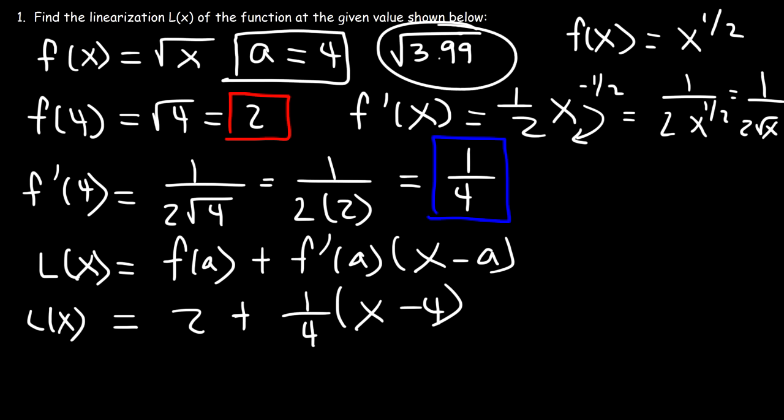Now, you have to decide if it's easier to use this form or this form. I think it might be easier to use this form. But, in the end, both will still be the same. So, let's calculate L(3.99). So, it's going to be 2 plus 1/4 times (3.99 minus 4). Now, 3.99 minus 4, that's negative 0.01.